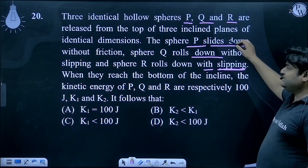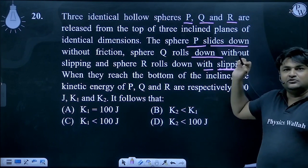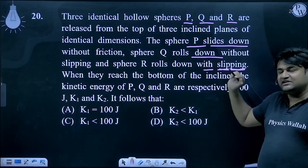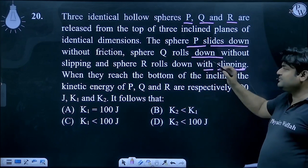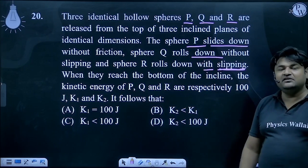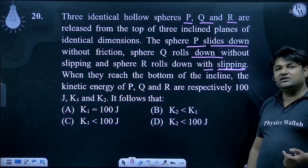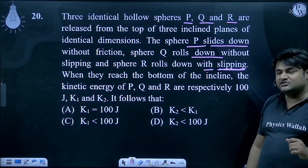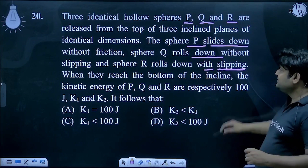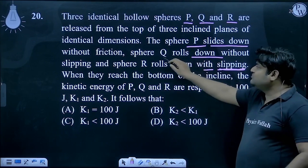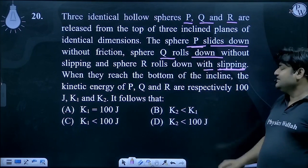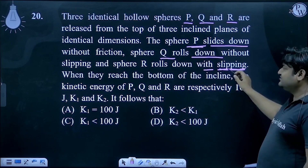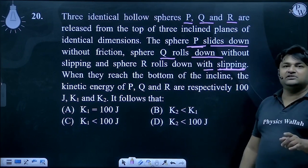For P, there is no friction, so there is no energy loss. In the pure rolling case (Q), friction does no work either. So there is no energy loss for Q, meaning Q and P have equal kinetic energy — K1 equals 100.